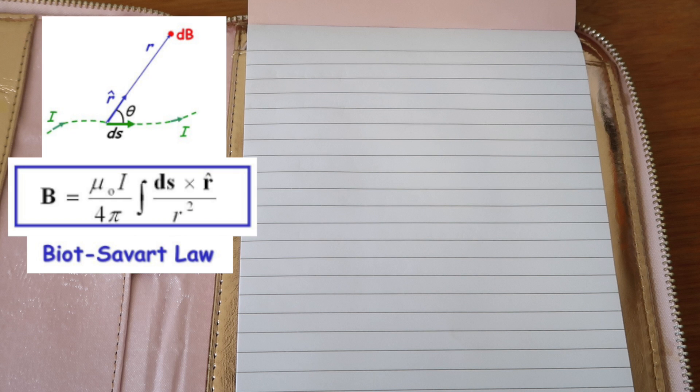If you want to find a magnetic field due to a current, you may use the Biot-Savart law. The equation includes an integral, some constants, and a cross product between two vectors. These vectors are the length of current and the location where the field is being measured.